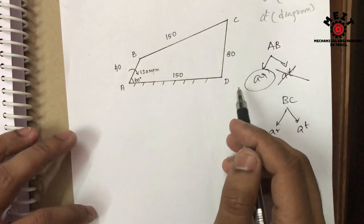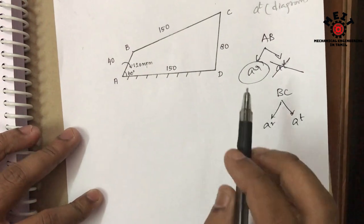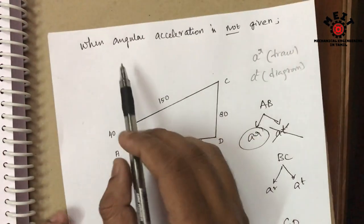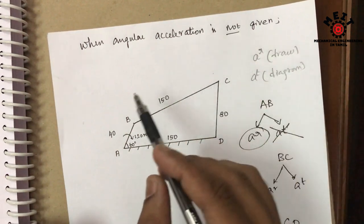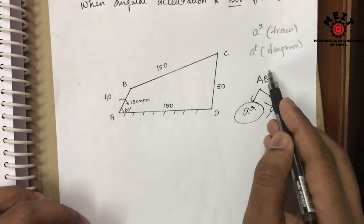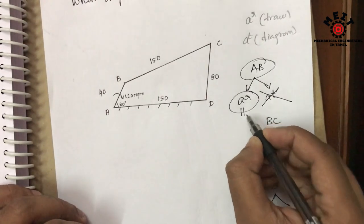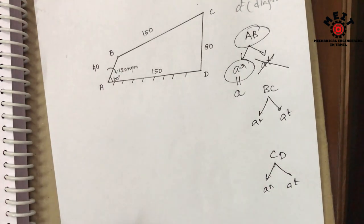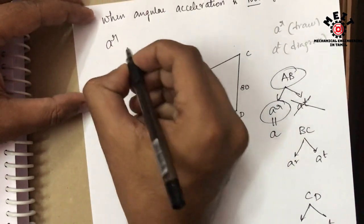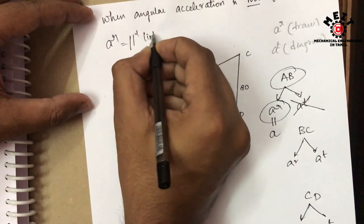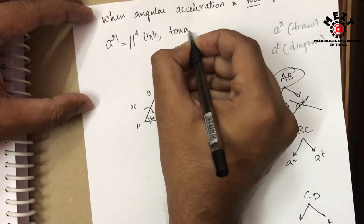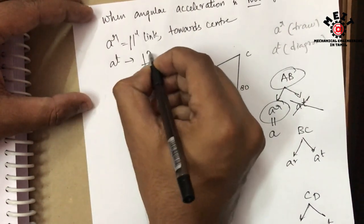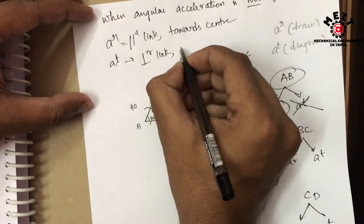In this case, when angular acceleration is not given, the AT value for AB is added as zero — that is, AR equals A total. AR is parallel to the link and AT is perpendicular to the link. AR is directed towards the center, and AT direction is along the link's movement direction.